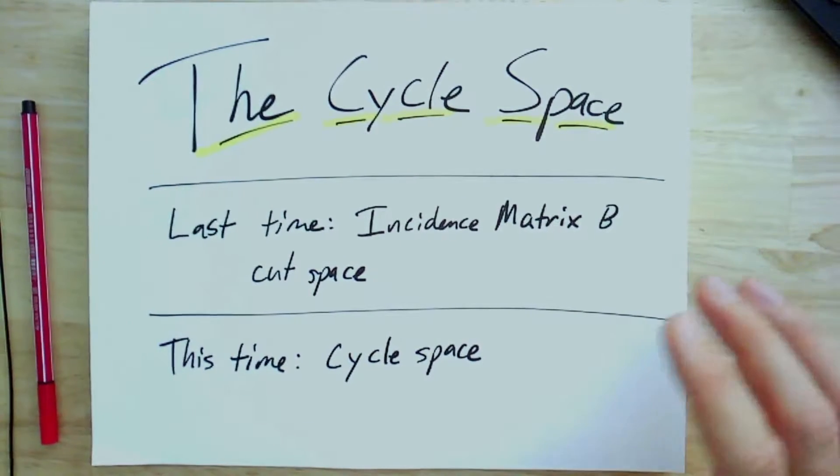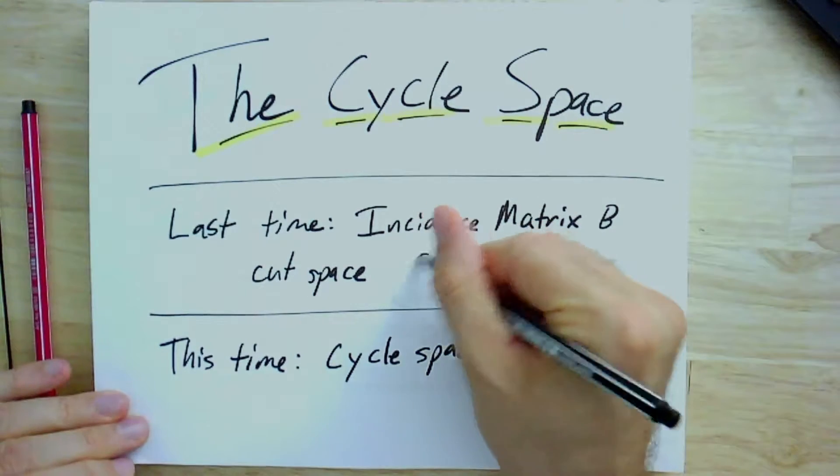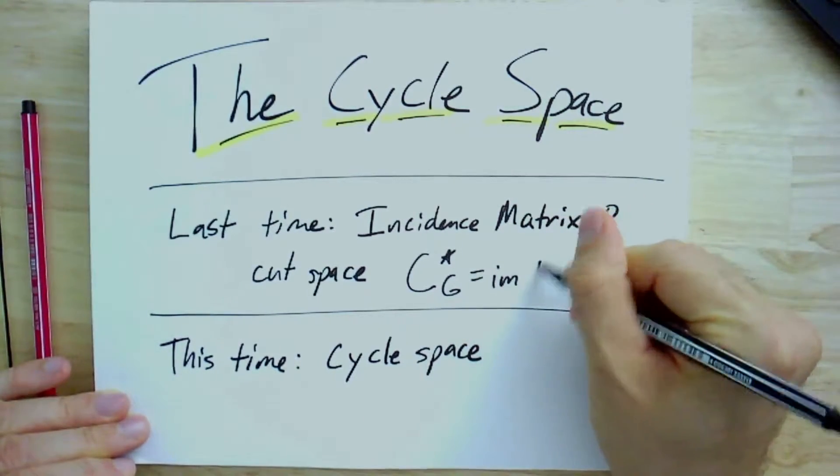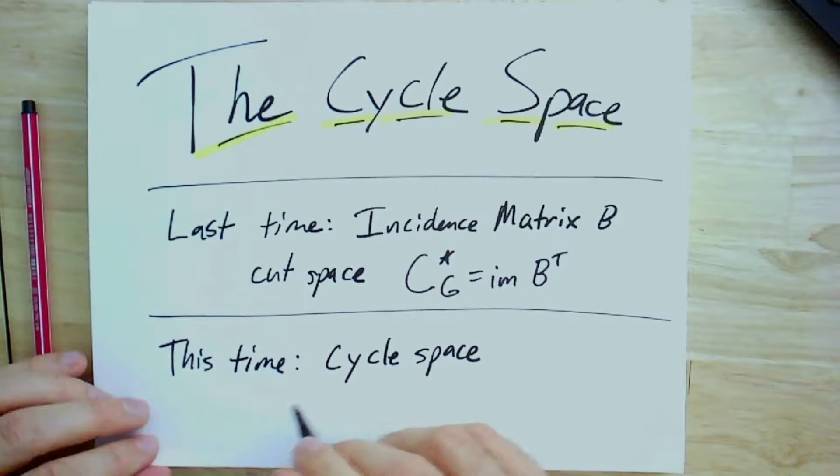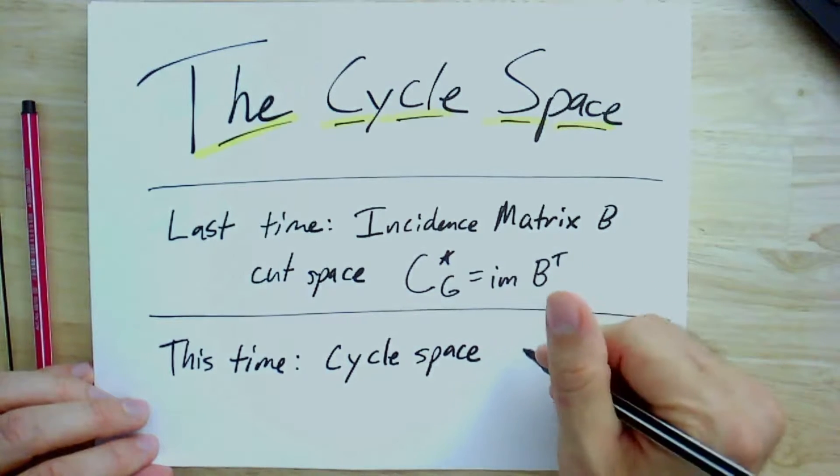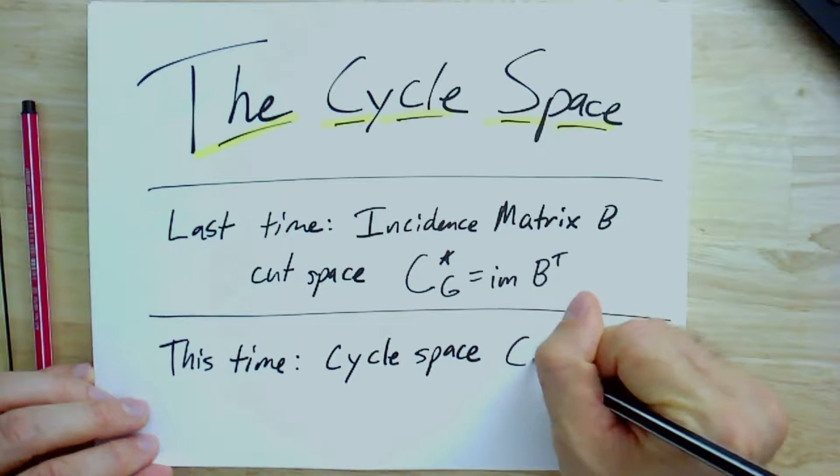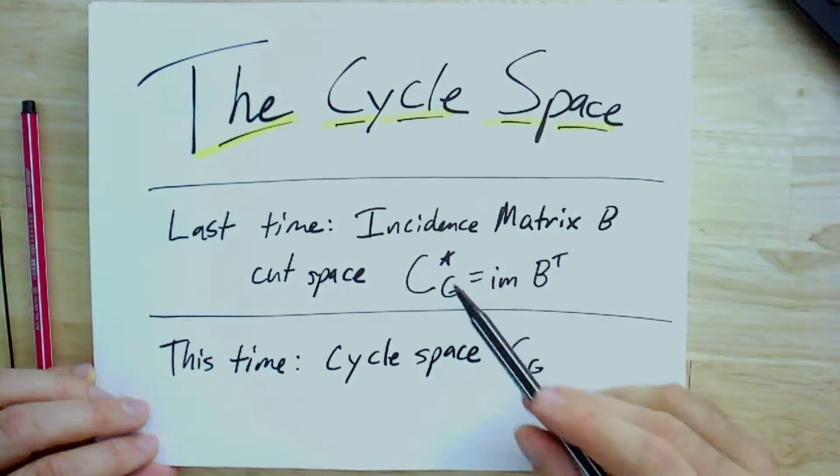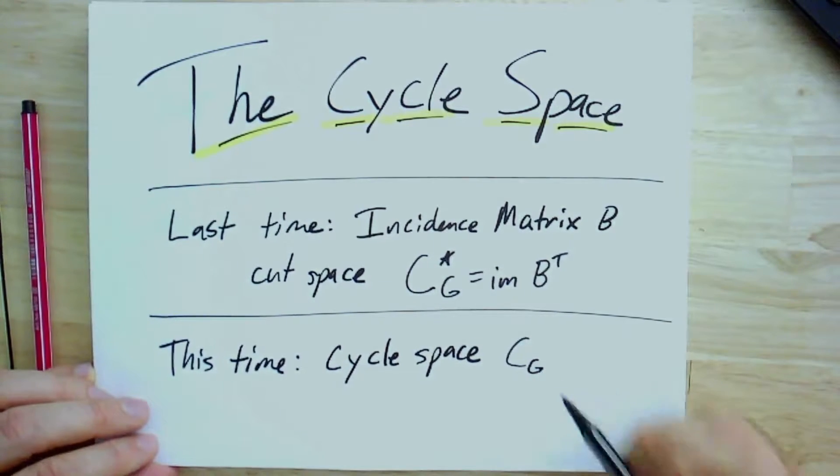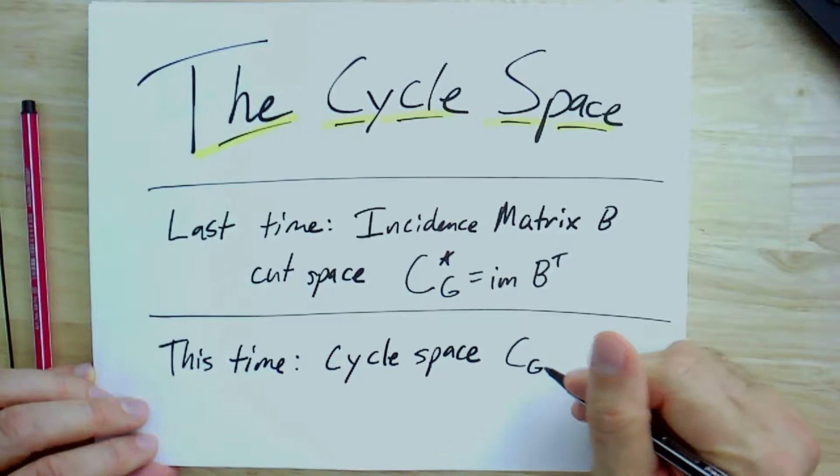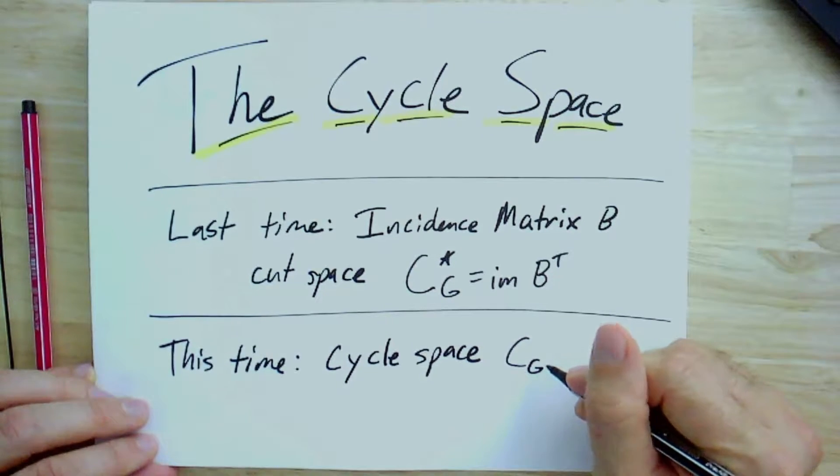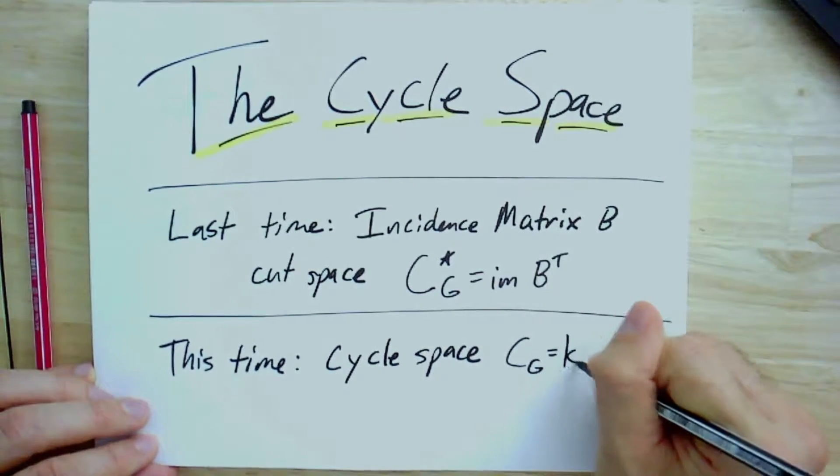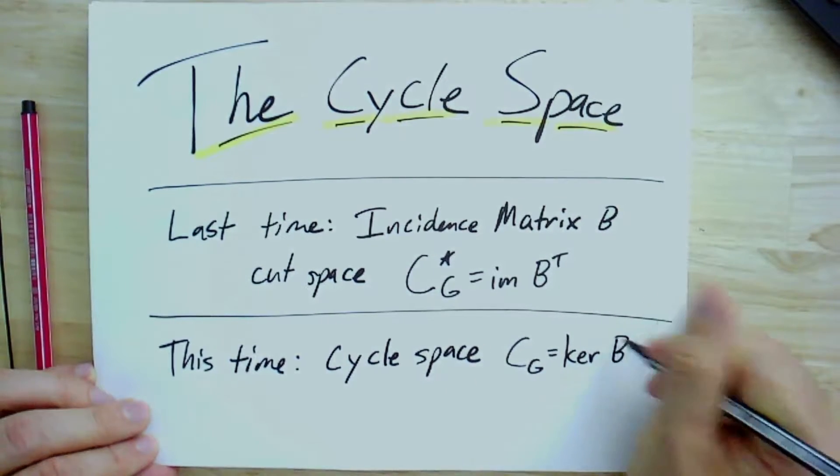Today we're going to push a little bit harder on this. We have the cut space as the image, and now we're going to look at something called the cycle space. This one's going to be CG, so no star. If you were wondering where that star came from, we had to mark it differently from the cycle space, which gets the honors of having just the regular C with no star. But also there's some other meaning to the star, which we'll hint at by the end.